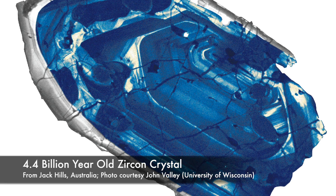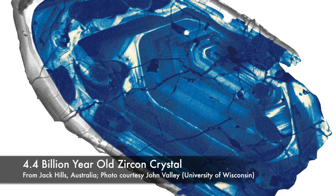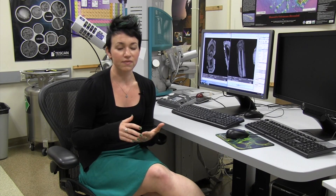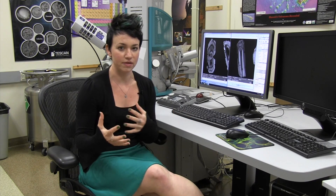In geology, mineralogy, and material science, we use CL to image the internal structures of materials. We can get information about composition, growth history, structural integrity, or defects that we wouldn't normally see using just the standard compositional or topography imaging techniques.